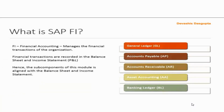What is SAP FI? FI Financial Accounting manages the financial transactions of the organization. Financial transactions are recorded in the balance sheet and income statement, that is profit and loss account. The subcomponents of this module are aligned with the balance sheet and income statement. The components are General Ledger (GL), Accounts Payable (AP), Accounts Receivable (AR), Asset Accounting (AA), and Banking Ledger (BL).